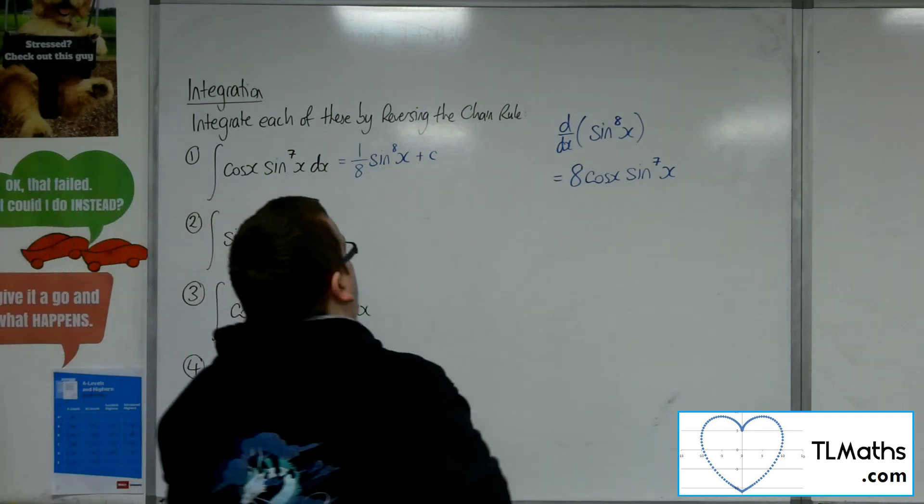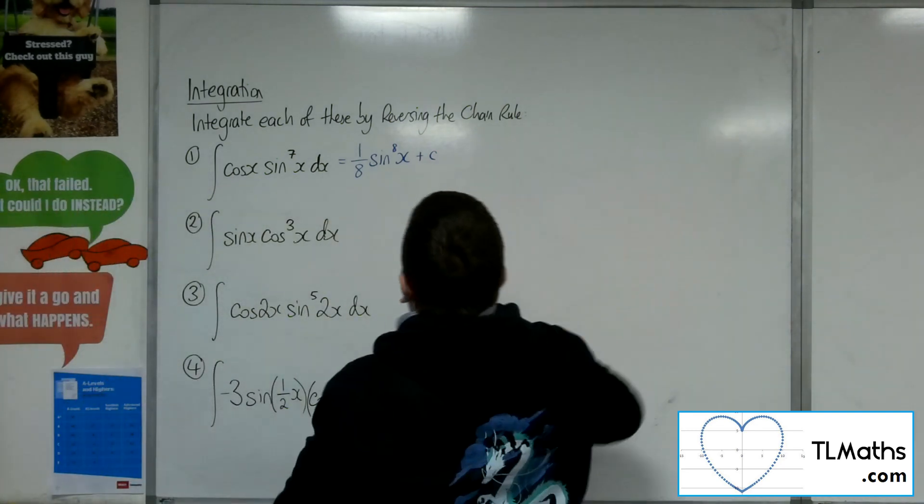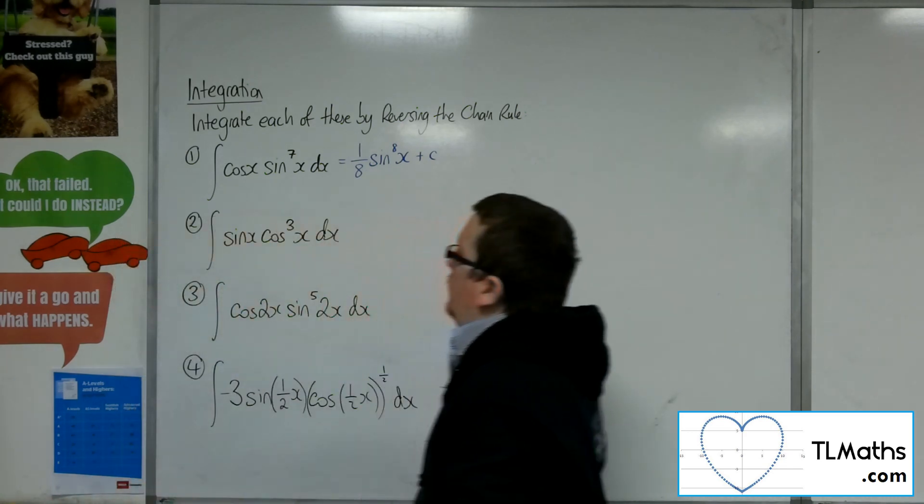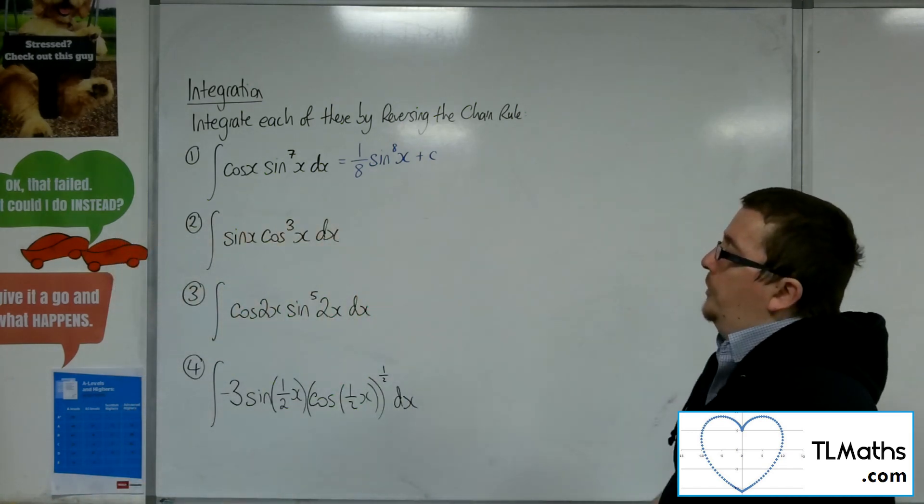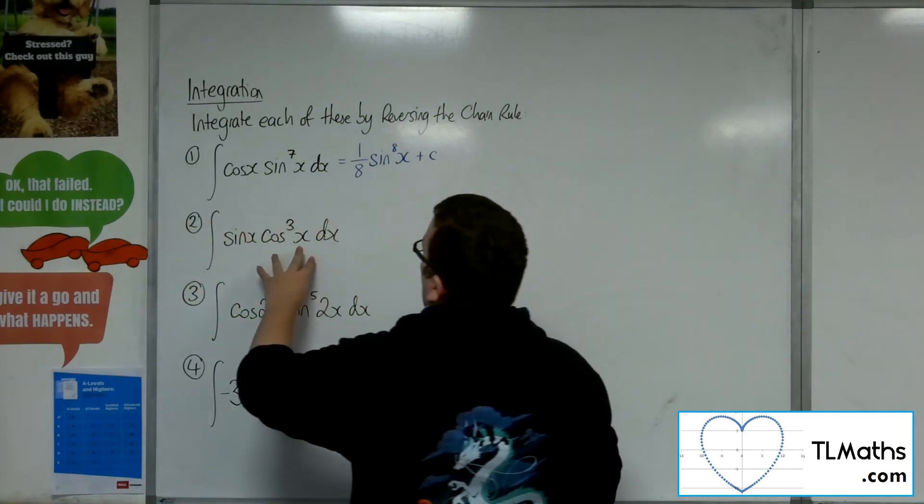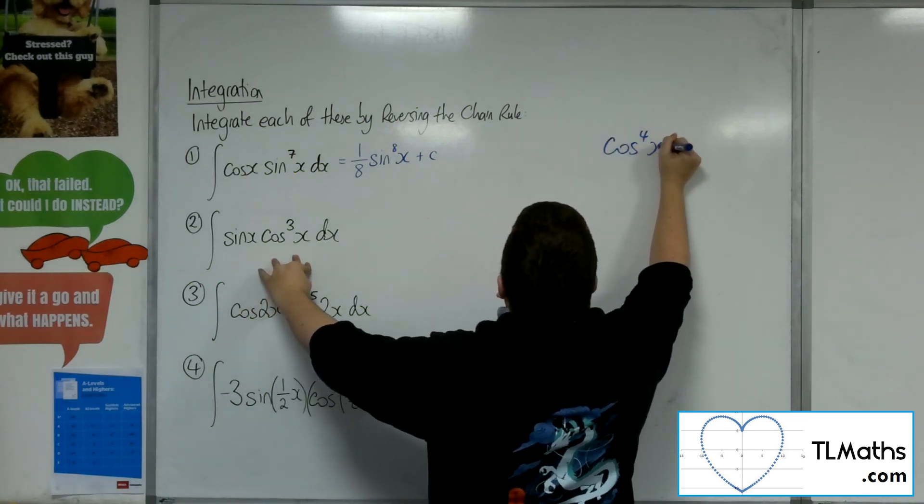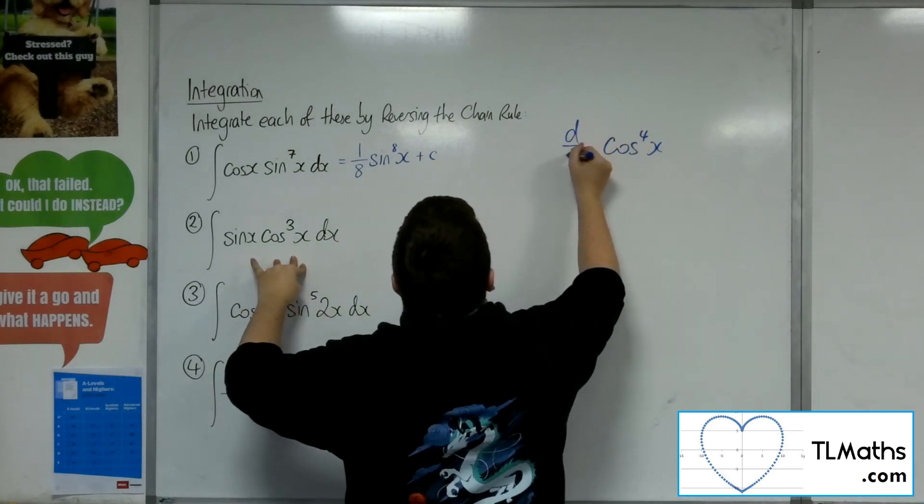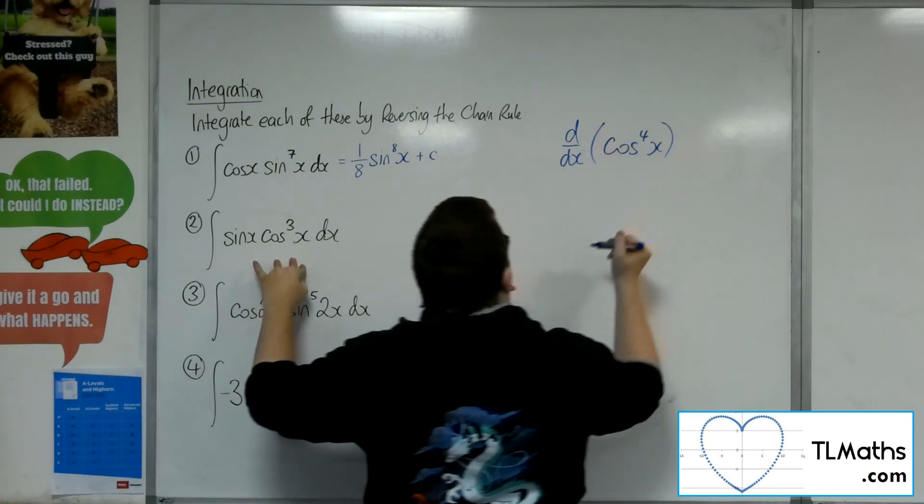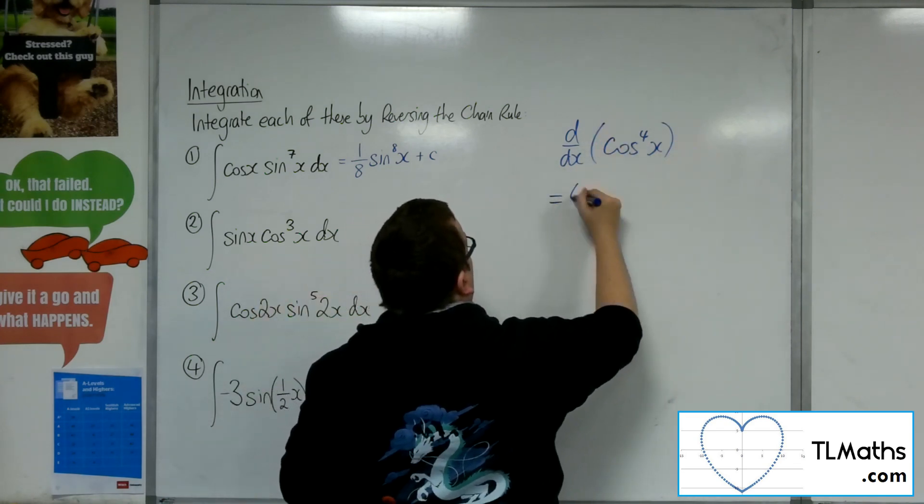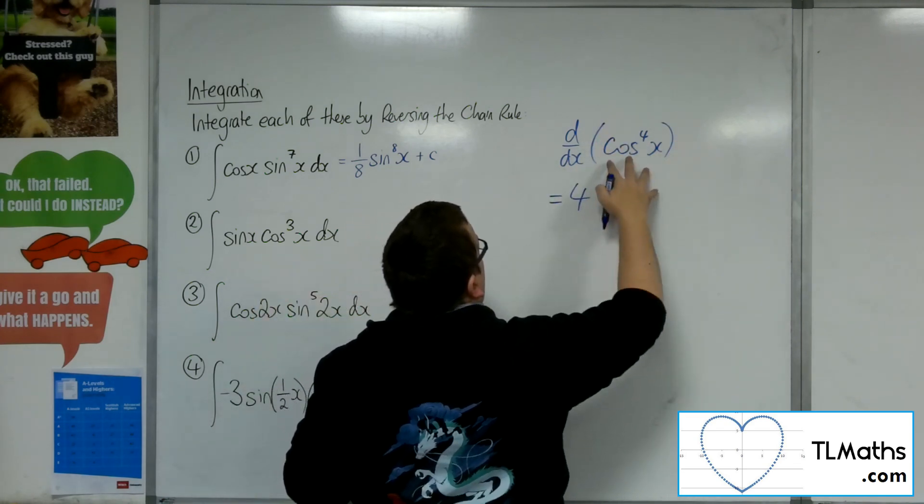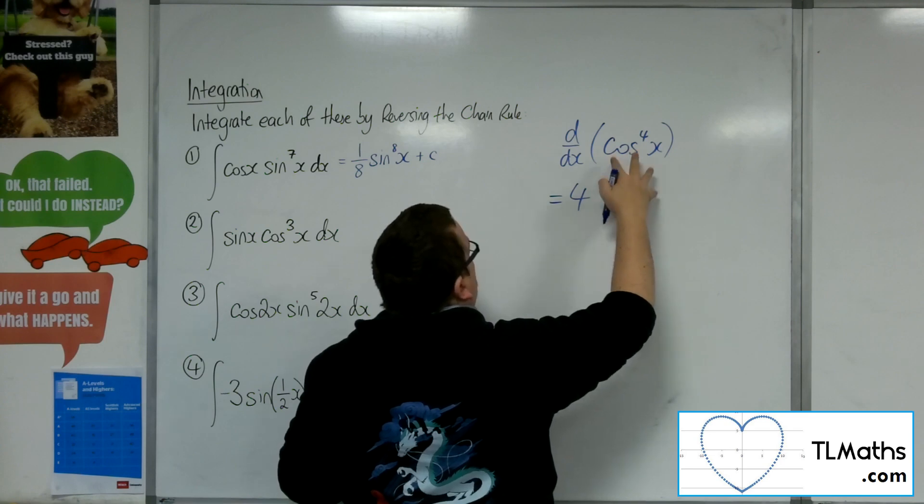Right, let's keep going. So number 2. We've got sine of x times cos cubed of x dx. So what I'd be expecting is to get a cosine to the 4x. So if I differentiate that, I'm going to get 4 coming out to the front. Now the derivative of cosine is minus sine, so there'll be a minus sine there.